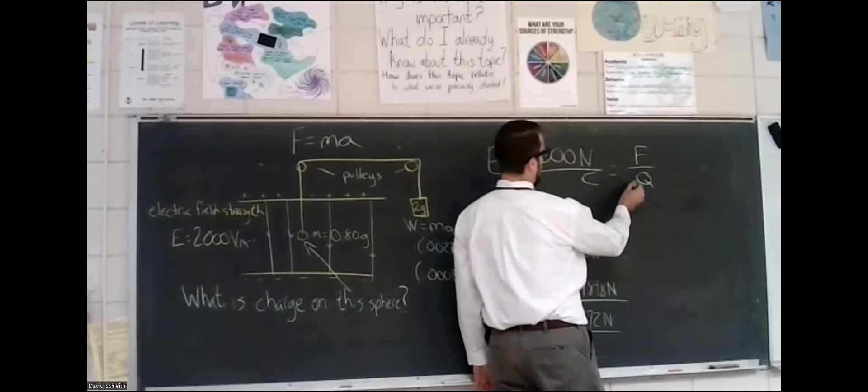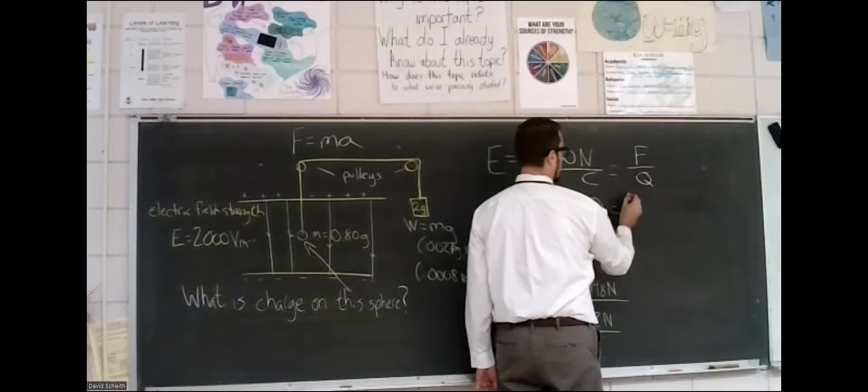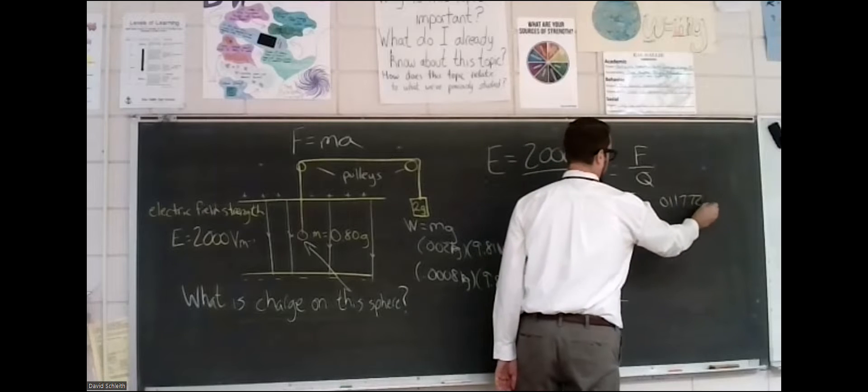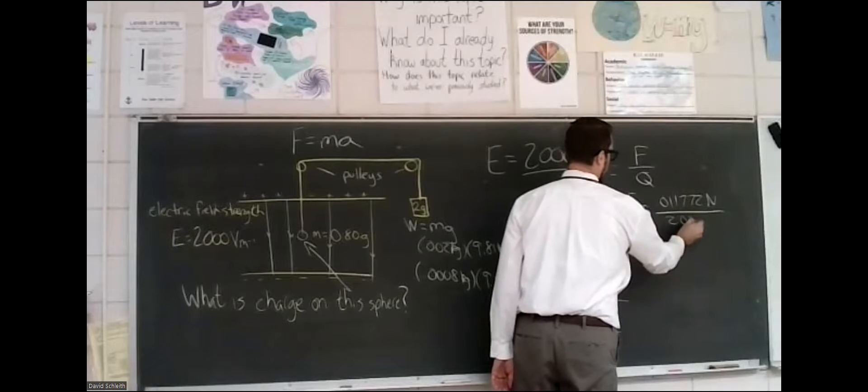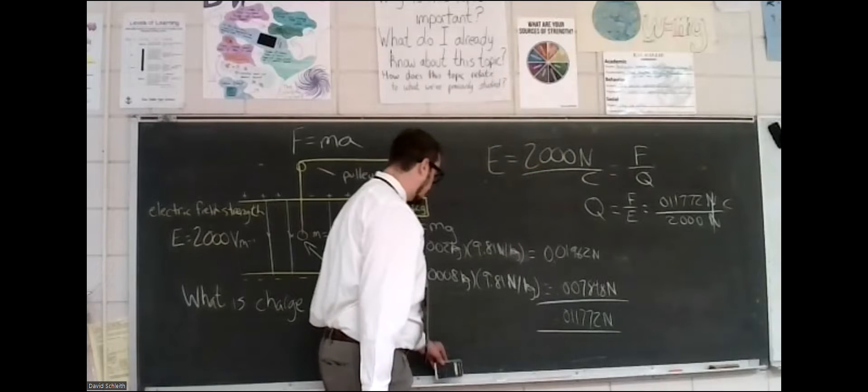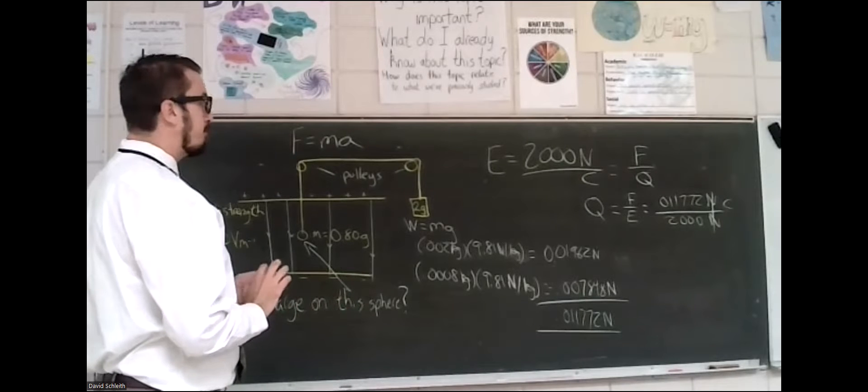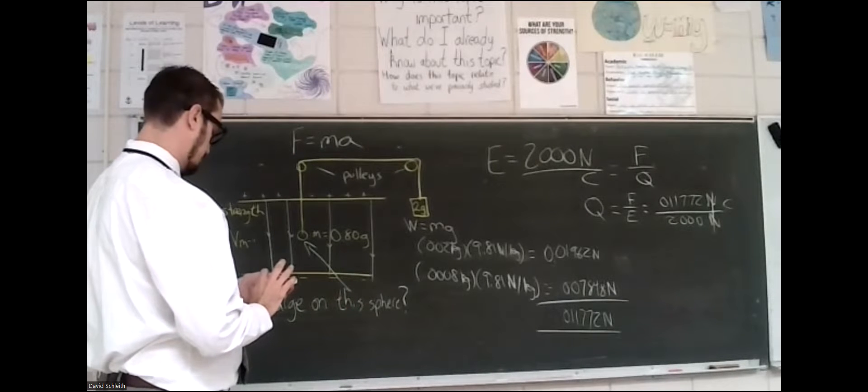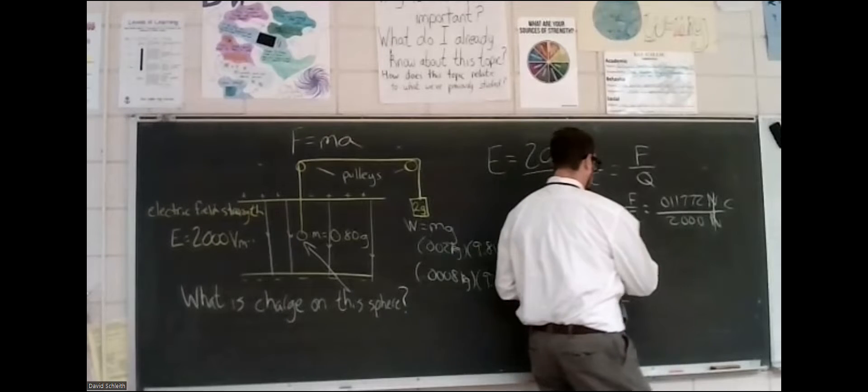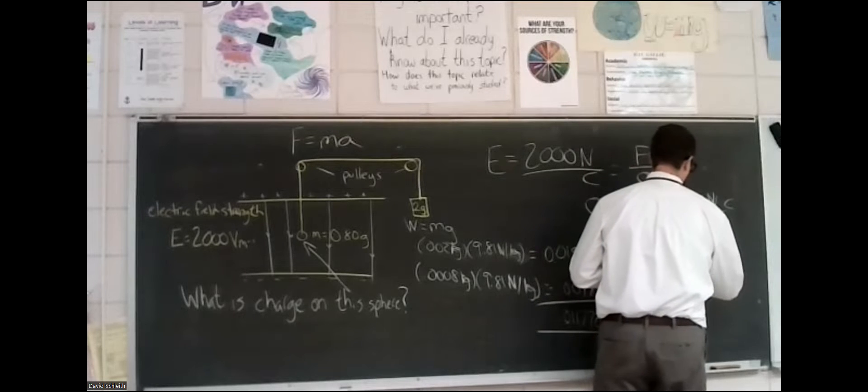So E equals F over Q. So that Q then would be equal to F over E. The force 0.011772 newtons divided by the electric field 2,000 newtons per coulomb. So newtons will cancel. We'll be left with coulombs, but the answer choices are all in micro coulombs. So one additional calculation is necessary. This leads to a charge of 5.886 times 10 to the negative 6 coulombs.